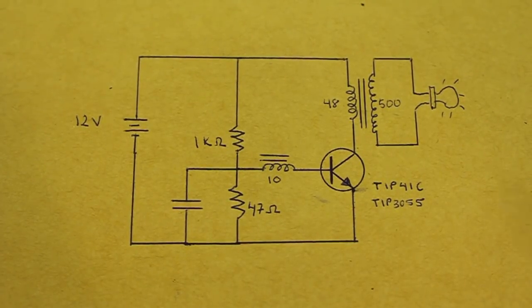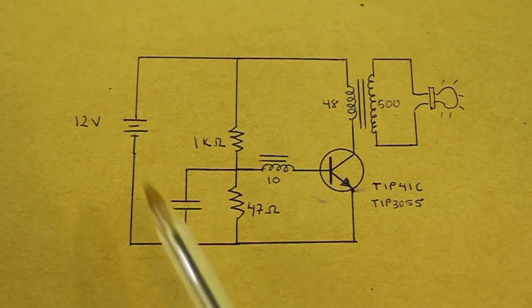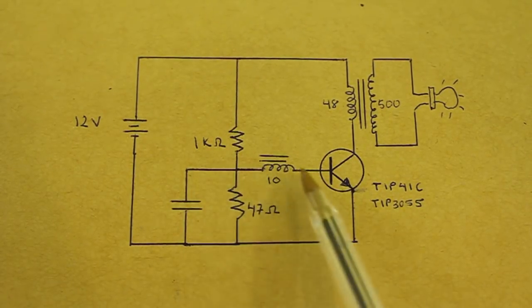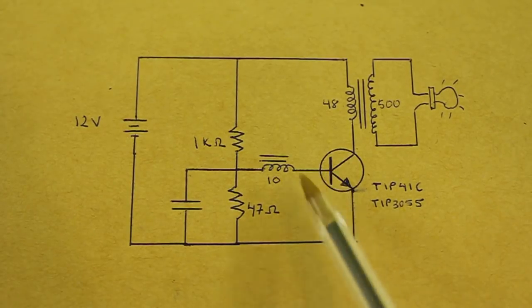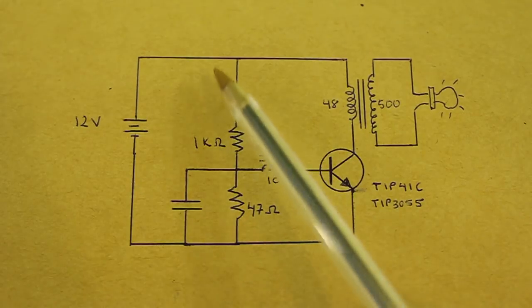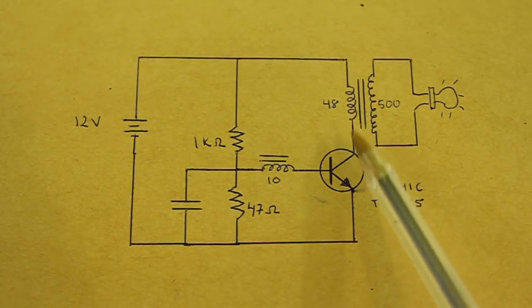Let's see how the circuit works. Initially we have a current that flows through this resistor to the base of the transistor, so the transistor starts to turn on and a current can flow through the primary.